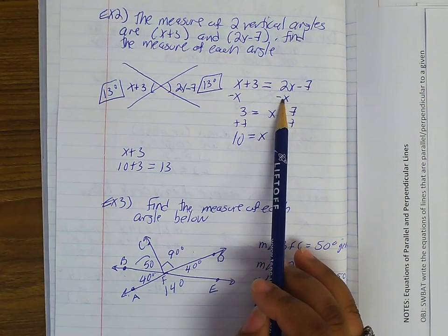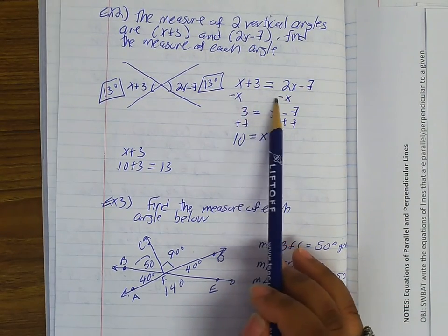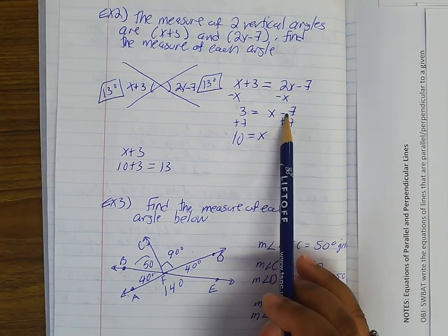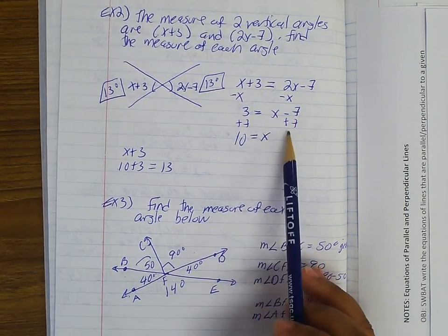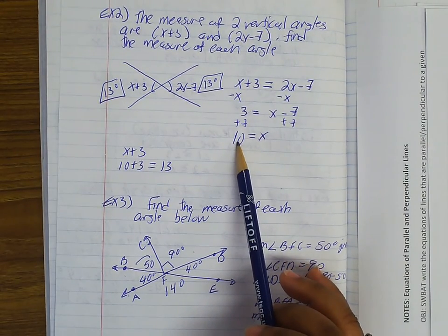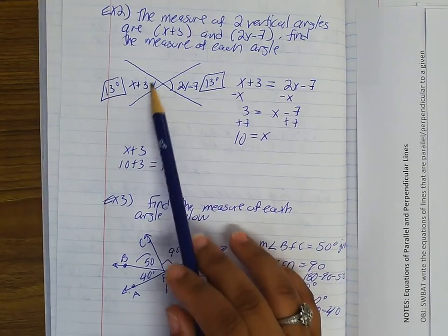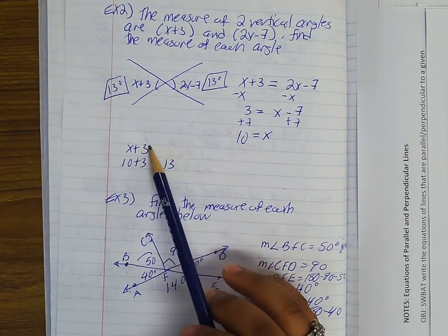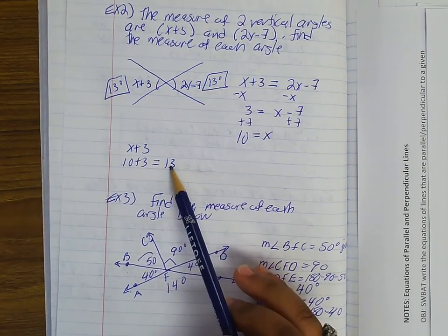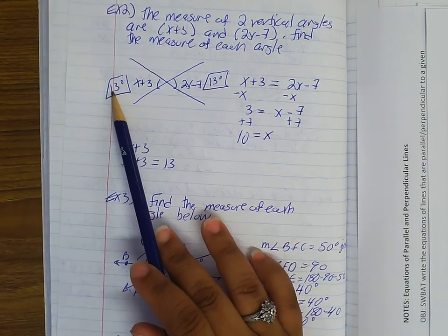I took away x from both sides. And then I'm left with 3 = x - 7. To get x by itself, I add 7 to both sides, so x = 10. To figure out the angle, I just took one of the expressions, x+3. I substitute in 10: 10+3 = 13. So both of these angles are 13 degrees.